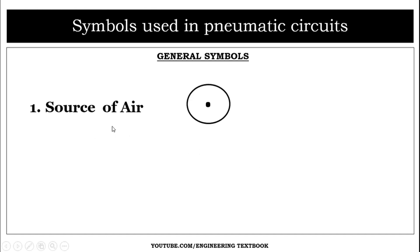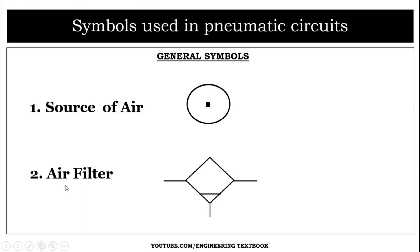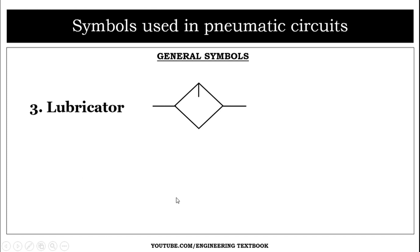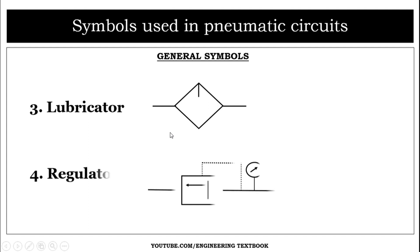The first general symbol is the source of air. Second is the air filter — here is the symbol of air filter. Third is the lubricator and its symbol, and fourth is the regulator and its symbol.